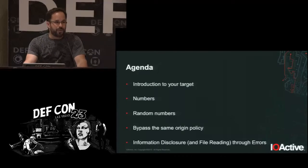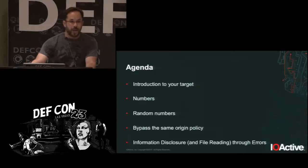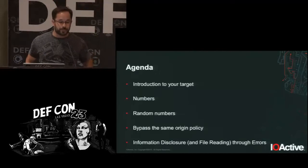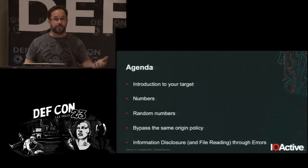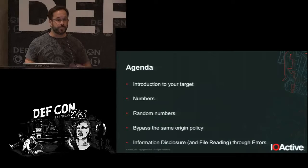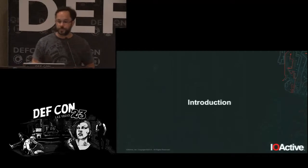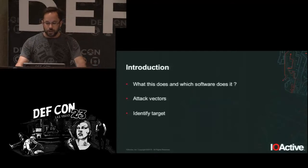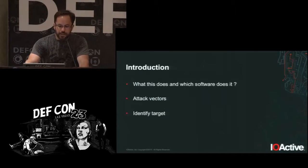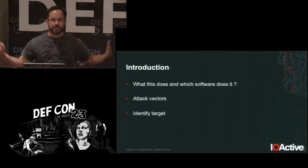We will briefly talk today about how you can identify your target, how numbers will let you affect integrity, how random numbers may be predictable, how to bypass the same-origin policy in a web browser using XSLT, and finally some information disclosure through errors.